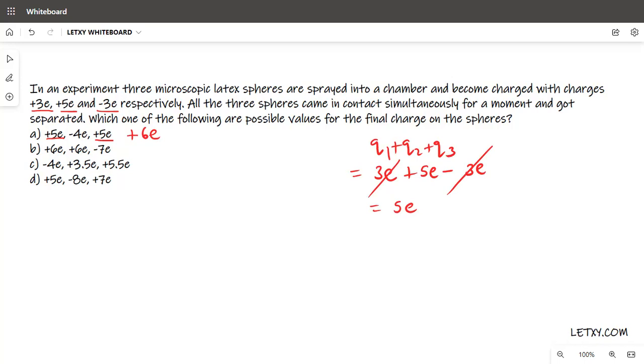The answer is +5e. As per the law of conservation of charge, the sum of all charges given in each option must equal +5e. If it doesn't equal +5e, the option is incorrect. Option A gives us +6e, so we can eliminate it.